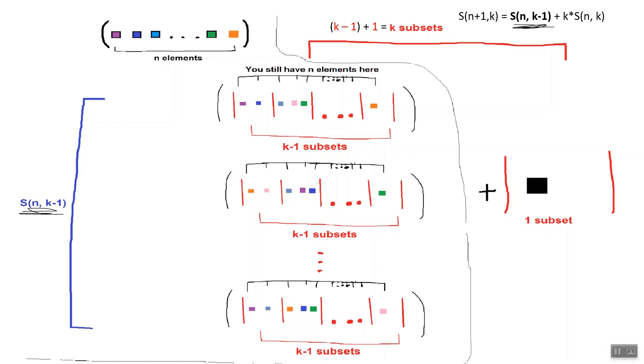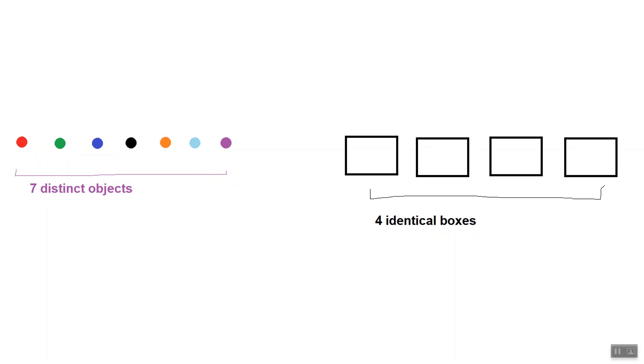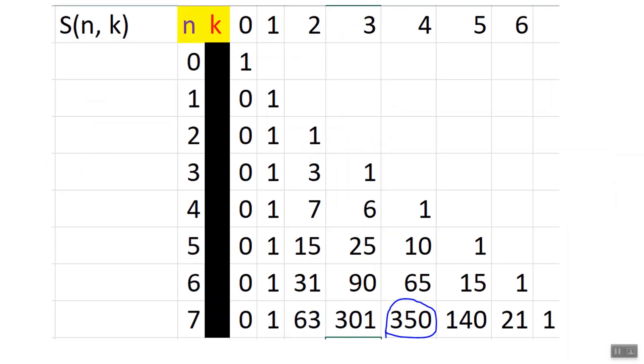We can enter this recursive formula into our spreadsheet and we will quickly have our answer to how many ways we can distribute seven distinct objects into four identical boxes. I encourage you to work out the solution for yourself. So there are 350 ways to distribute seven unique items into four identical boxes such that no box is empty. Now, aren't we glad we're not going to have to count out all those possibilities ourselves?